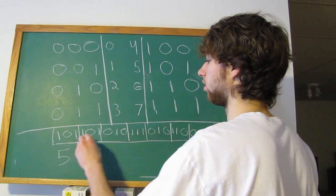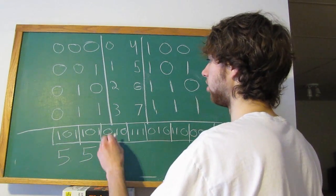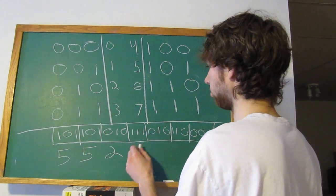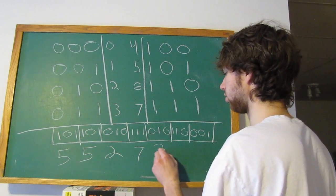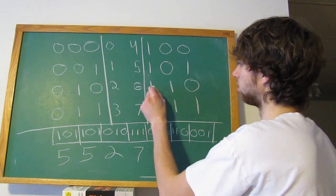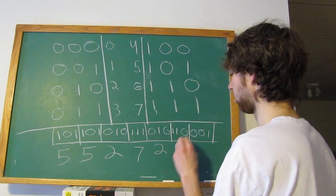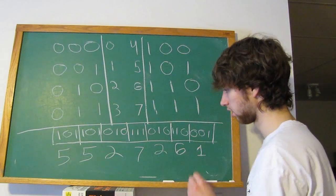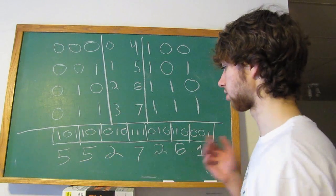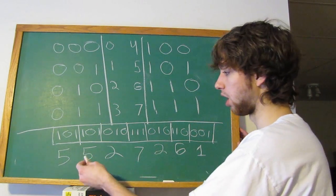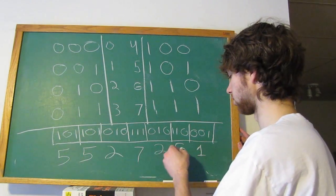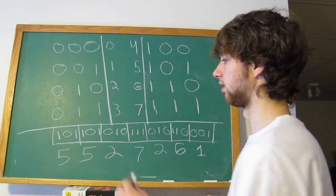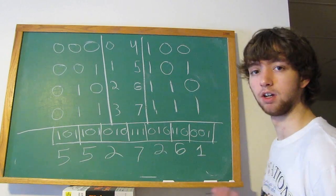101 is 5. 101, 5. 010, which is 2. 111, 7. 010 is 2. 110 is 6. 001 is 1. So now we can illustrate this with the octal 5527261. It's a little longer than hexadecimal, but it's still more convenient than looking at this huge strand of binary.